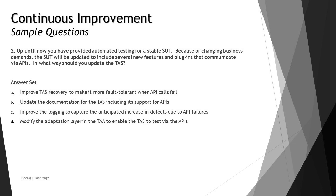Option A: improve TAS recovery to make it more fault-tolerant when API calls fail. This option does not directly enhance the API testing capabilities of the TAS — it only assists with handling API call failures at runtime, but does not generally help you update your TAS. Option B: update the documentation for the TAS including its support for APIs. Documentation support is helpful but will not increase the capabilities of the TAS.